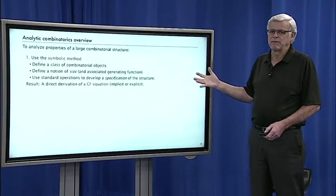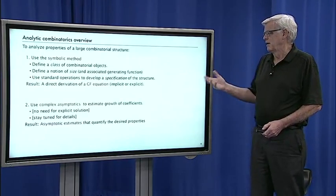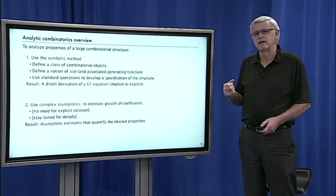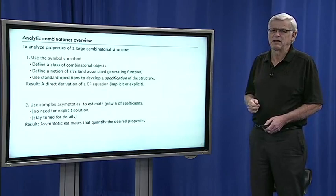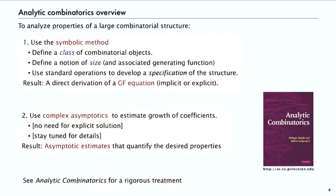For part two, we're going to talk about the symbolic method in more detail with many other examples. But when it comes to estimating the asymptotic values of the coefficients, we're going to use complex asymptotics. We don't have to find an explicit solution. That'll be the second part of this part two, where we'll talk about directly deriving asymptotic estimates that give us the desired properties.